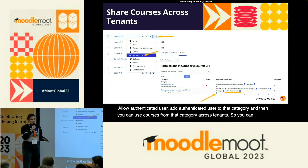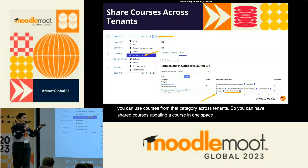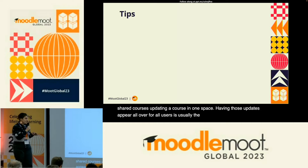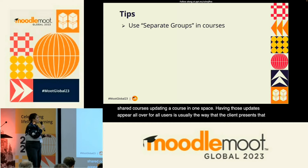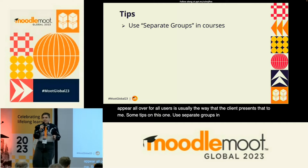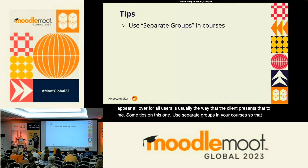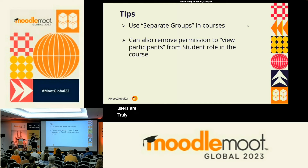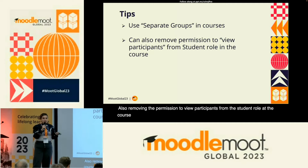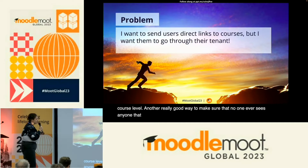Updating a course in one space and having those updates appear for all users is usually how the client presents that to me. Some tips: use separate groups in your courses so that users are truly separate from one another. Also, removing the permission to view participants from the student role at the course level is another really good way to make sure no one ever sees anyone they should not be seeing.